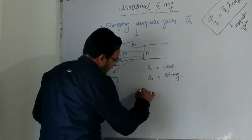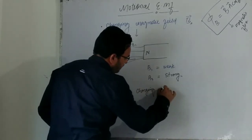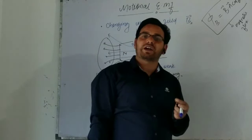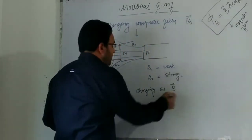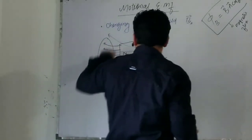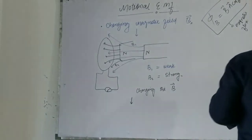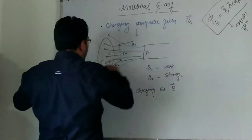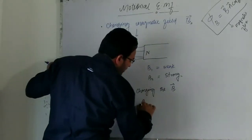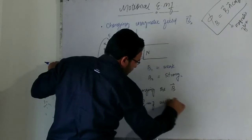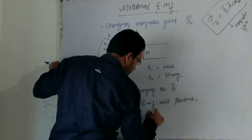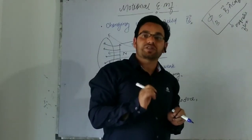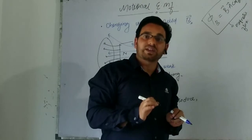Here we are changing the magnetic field. The change in magnetic field causes a change in magnetic flux, which produces an induced EMF. This EMF is responsible for creating and flowing electric current in any conductor.